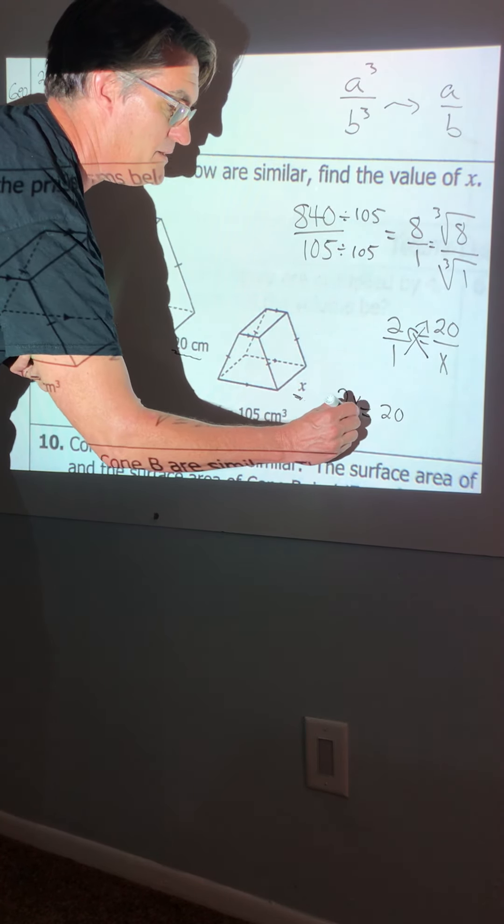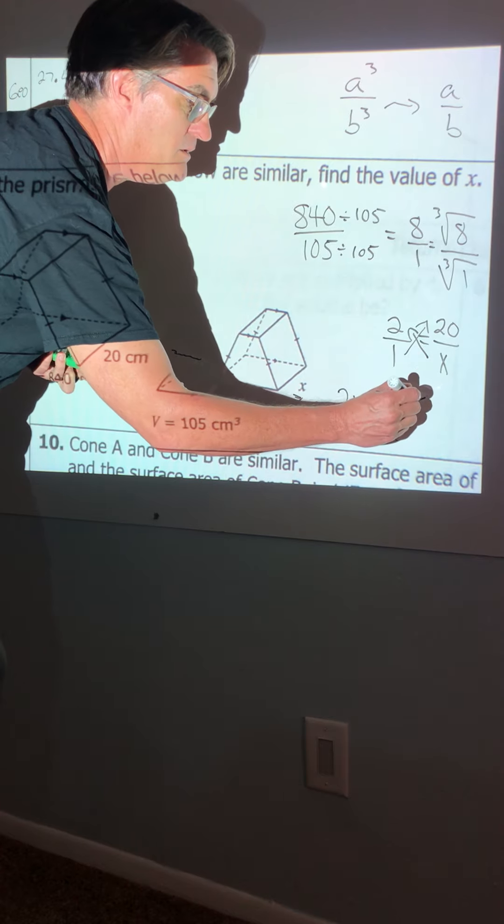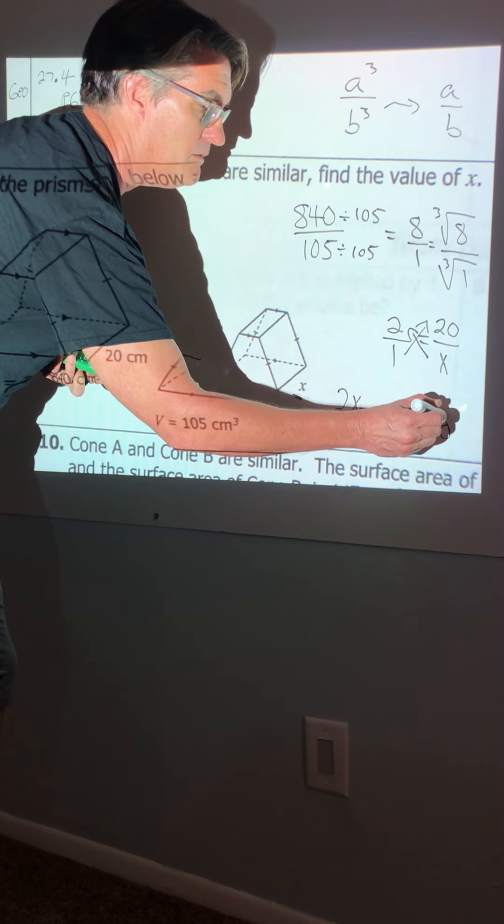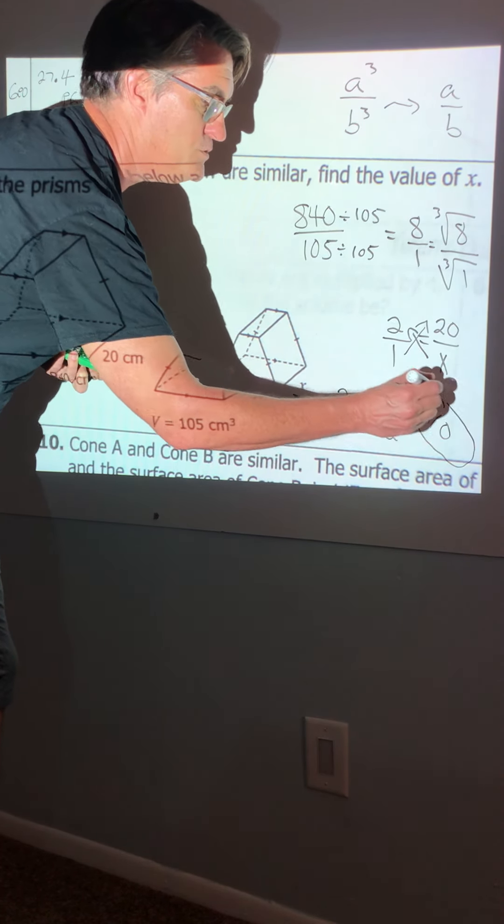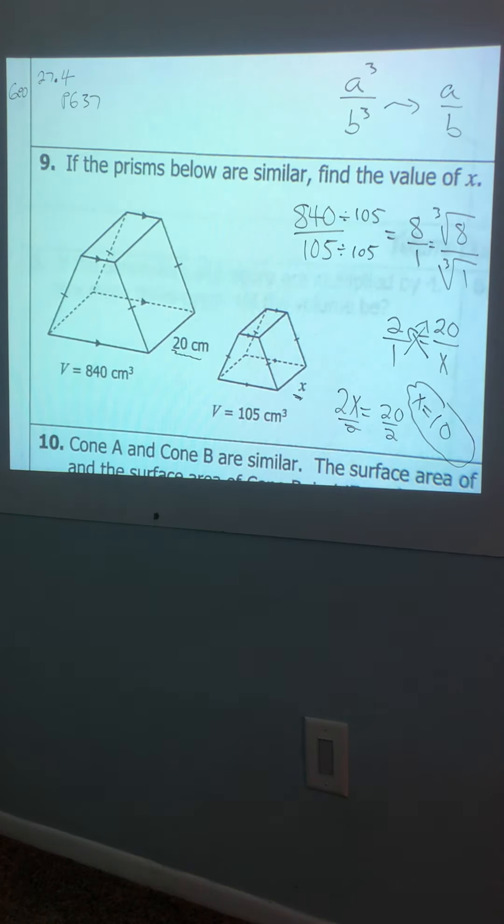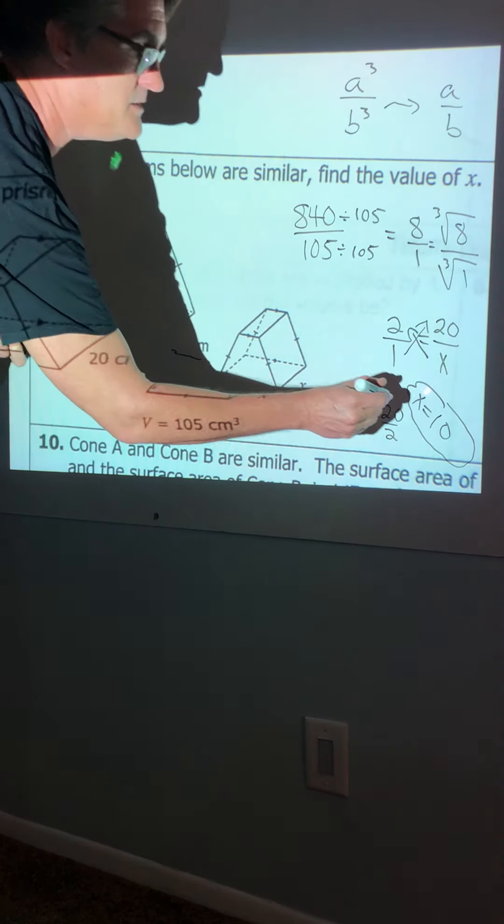So now 2x equals 20. You divide by those, divide by those, and you get x equals 10. And then you don't do squared. You don't do cubed. If you're finding a part, it's just 10 centimeters.